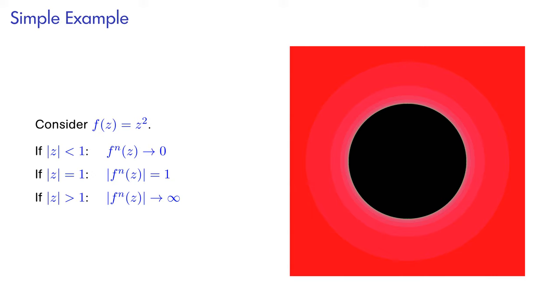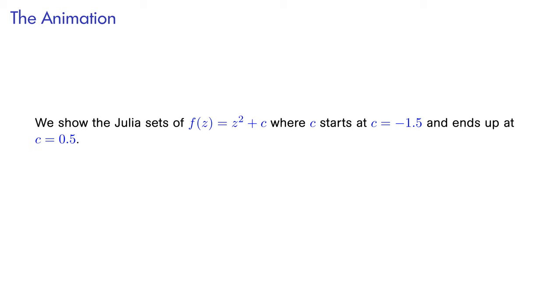If the magnitude of the starting point z is greater than 1, then the magnitude of the powers of z will go towards infinity. So we're not in the black area. That means the black area in this case is the unit disc centered at the origin, and its edge the unit circle. This is the Julia set of the function f equals z squared.